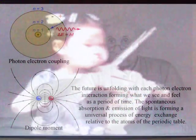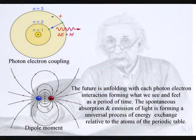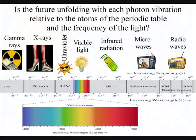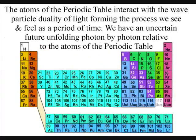We have an emergent future unfolding with each photon-electron coupling or dipole moment only occurring once, forming an uncertain future relative to the atoms. This forms an interactive process between the light of the electromagnetic spectrum and the atoms of the periodic table.